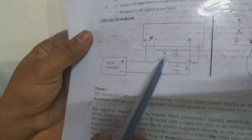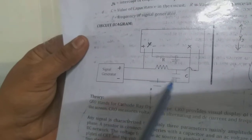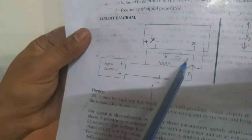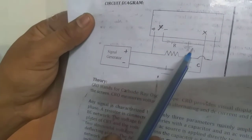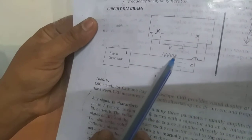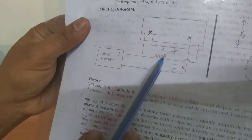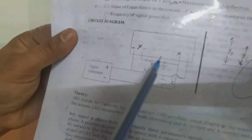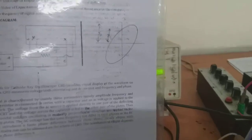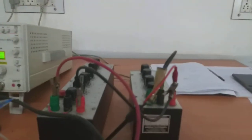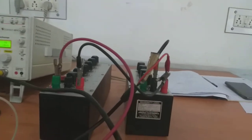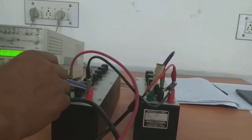An RC circuit is used to introduce the phase difference, because the signals supplied from the signal generator are one and the same. So we use resistance and capacitance to introduce the phase angle difference. Instead of single resistance and capacitance, we are using a resistance box and a capacitance box, because these provide variable resistance and variable capacitance.